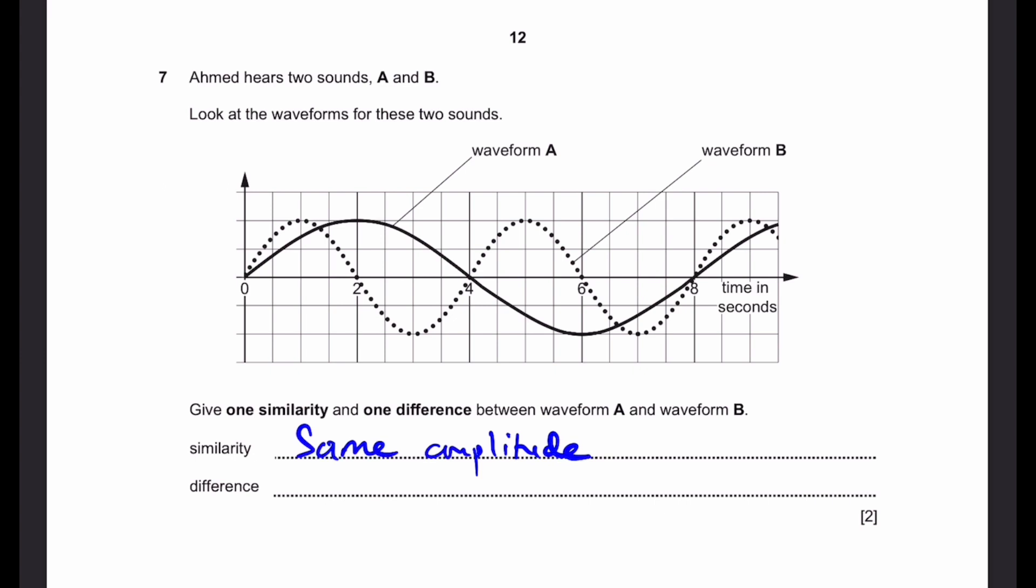And the difference is going to be that waveform B has a higher frequency than waveform A as we can see that there's more waves per unit time or per second. So in this case there's one wave every four seconds but for waveform A it's one waveform every eight seconds which is longer. Therefore the difference is that they have different frequencies.